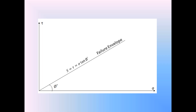By using this failure envelope of cohesionless soil, we can determine whether the soil is in stable condition or failure condition. The straight line passes through the origin making angle phi dash with the x-axis, with equation s equals tau equals sigma tan phi dash. This failure envelope introduction leads us into Rankine's Earth Pressure Theory.